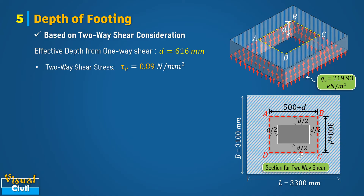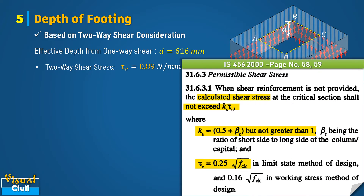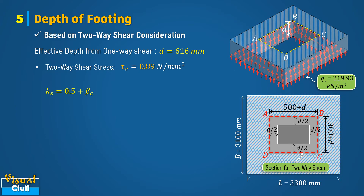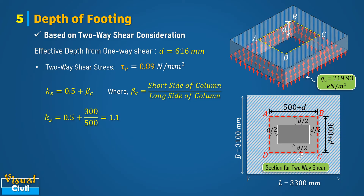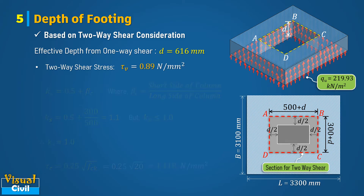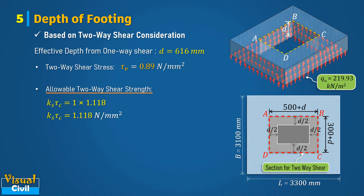As per clause 31.6.3, the calculated two-way shear stress at the critical section shall not exceed ks into tau c. The ks equals 0.5 plus beta c, where beta c is the ratio of short side to long side of the column. We get ks equal to 1.1, but ks should be less than or equal to 1, hence consider ks equal to 1. Next, tau c is equal to 0.25 into under root of fck, which gives 1.118 Newton per mm square. Therefore, the allowable two-way shear strength ks into tau c equals 1.118 Newton per mm square. This is more than shear stress tau v, hence the effective depth is adequate for two-way shear also.